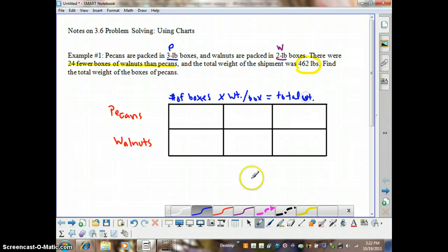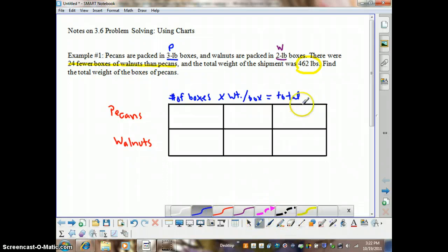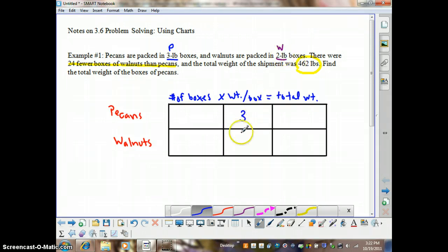So let me fix that a little bit here, total weight. Let's start with the weight per box. We know pecans weigh three pounds per box, so we're going to put a three here. And we know walnuts weigh two pounds per box, so we're going to put a two here.